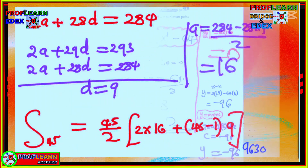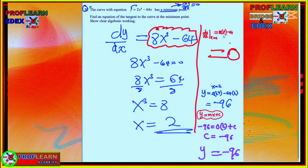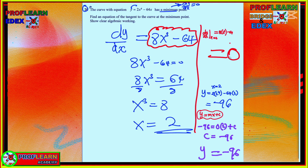The next question that made this student cry involves curves and minimum points. The curve is y = 2x⁴ − 64x and has a minimum point. To find the equation of the tangent, you first differentiate: dy/dx = 8x³ − 64. At the minimum point dy/dx = 0, so equating gives x = 2.